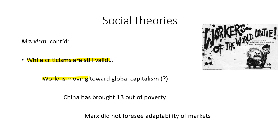Marxist criticisms are still valid in looking at the externalities of capitalism that we need to regulate and alleviate. The world is potentially moving towards a global capitalist system, and it has shown some success — once China got plugged into it in the late 1970s and early 1980s, they brought over a billion people out of poverty, though it's more of a controlled capitalism. Marx may not have anticipated the adaptability of market systems or that a common worker could own stock in their corporation.